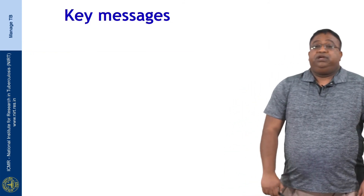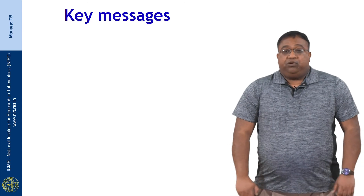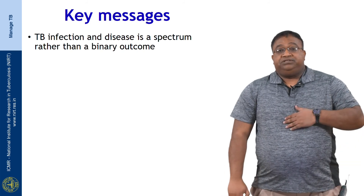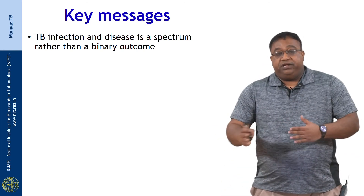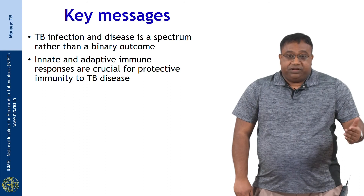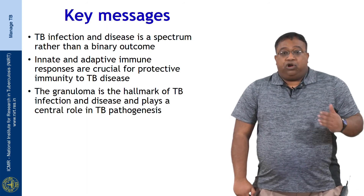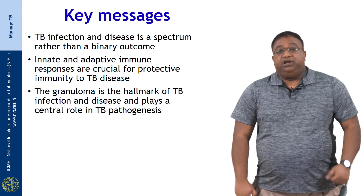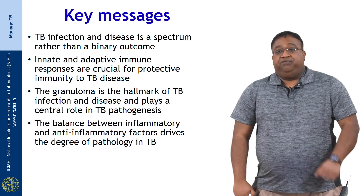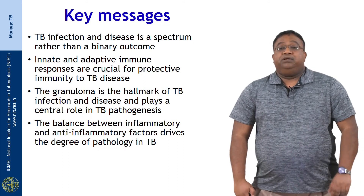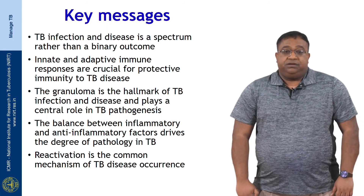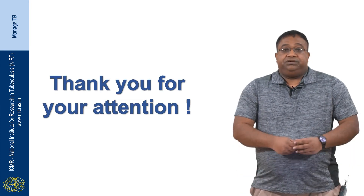To conclude, the key messages from the session on the pathogenesis of TB are as follows: TB infection and disease is a spectrum rather than a binary outcome; innate and adaptive immune responses are crucial for protective immunity to TB disease; the granuloma is the hallmark of TB infection and disease and plays a central role in TB pathogenesis; the balance between inflammatory and anti-inflammatory factors drives the degree of pathology in TB; and finally, reactivation is the common mechanism of TB disease occurrence in adults. With this we come to the end of the session. Thank you very much.